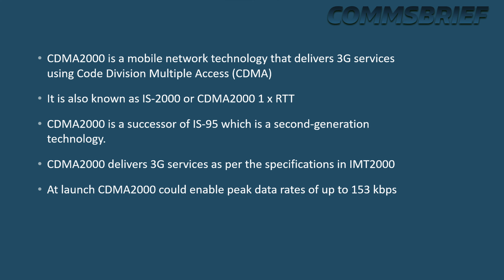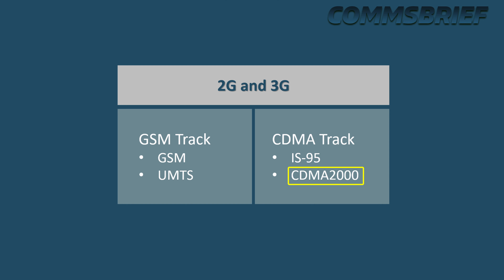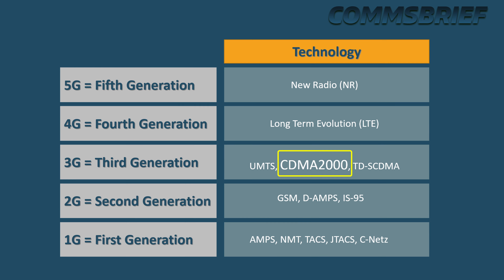At launch, CDMA 2000 could enable peak data rates of up to 153 kbps. For 2G and 3G networks, there have been two main tracks for mobile network evolution: the GSM track and the CDMA track. CDMA 2000 is a 3G technology on the CDMA track.